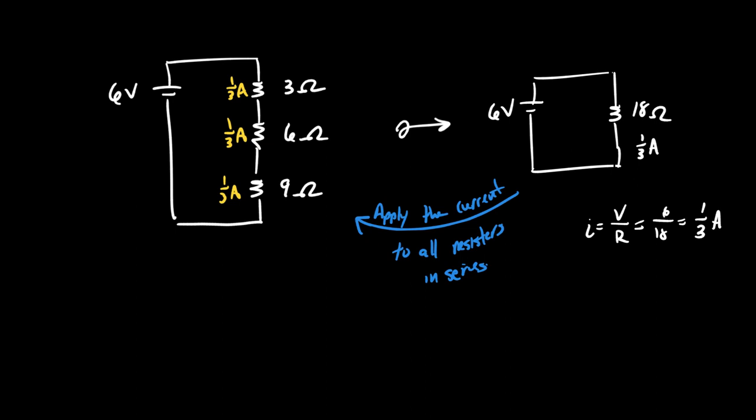Voltage is current times resistance. Just take that, turn it around and solve for V. Third times three, one volt. Third times six, two volts. Third times nine, three volts. Do they equal six when you add them all up? Solving a circuit. Pretty straightforward.